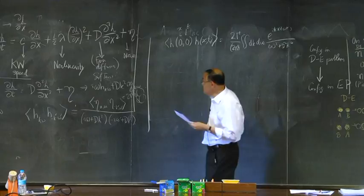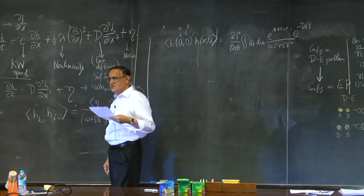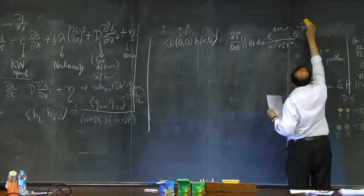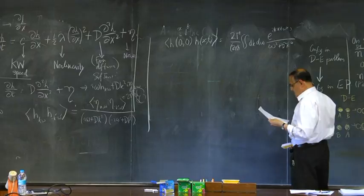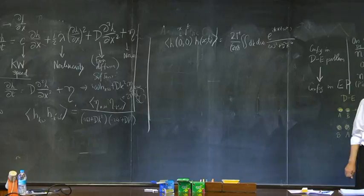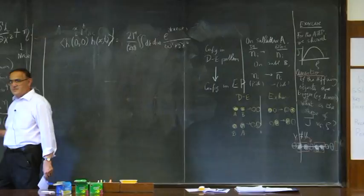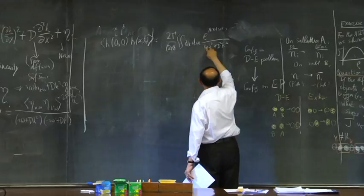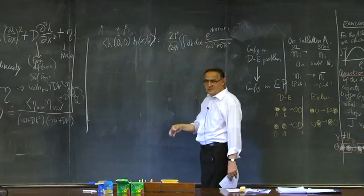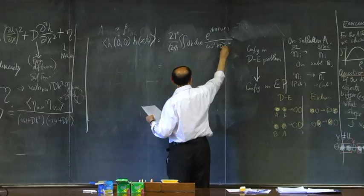We can write this as 2*gamma over (2*pi)^2, integrating d*k*d*omega, with e^{i(kx + omega*t)} in the numerator divided by omega^2 plus D^2*k^4. Now do the omega integration: the integral of 1/(omega^2 + constant^2) gives an exponentially decaying function. After the omega integral, we get 2*gamma over D times 1/(2*pi), integrating dk with e^{-D*k^2*t} times e^{ikx} divided by k^2.